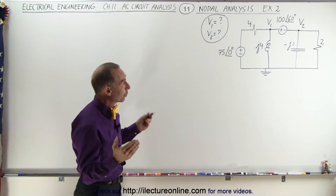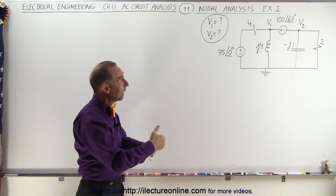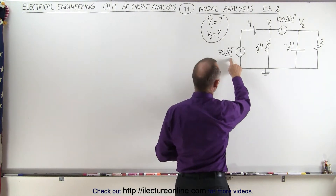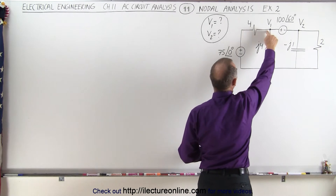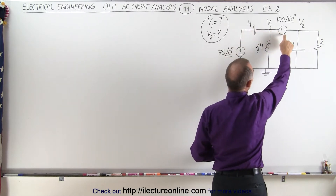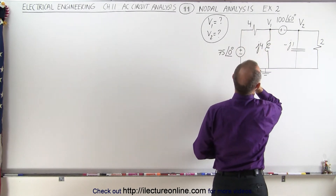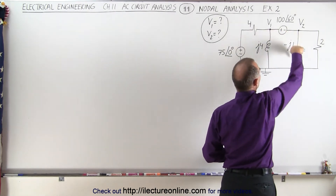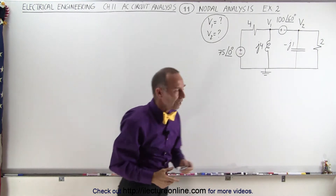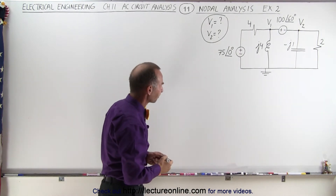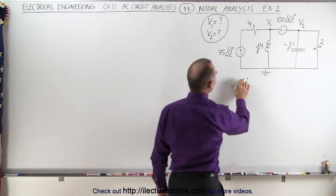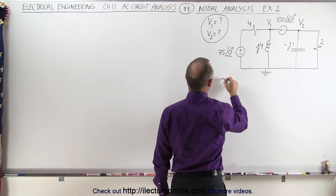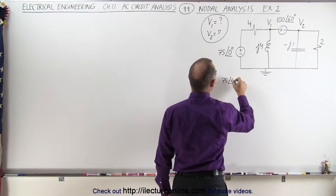To do that, we need to add all the currents leading into that node and set that equal to all the currents leaving the node. Since we have a source voltage right here, that would drive current into this node. We're going to assume that the current will be leaving the node through these three branches right there. So let's go ahead and try that technique. The current going into the node will be the source voltage right here, which is 75 with a phase angle of 0 degrees.